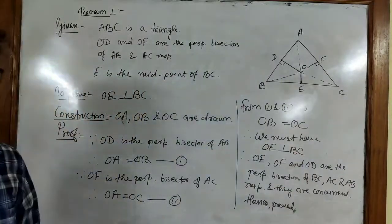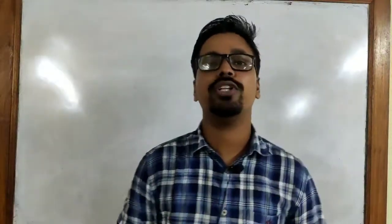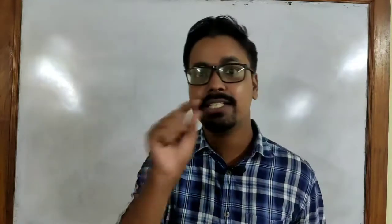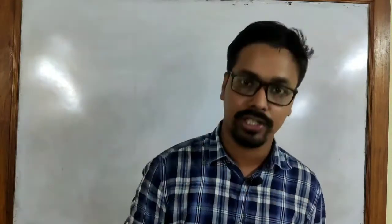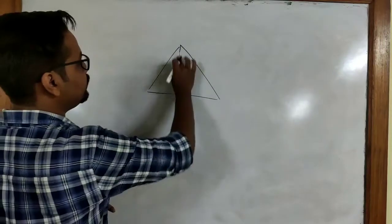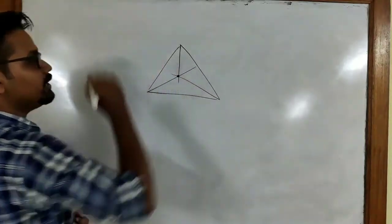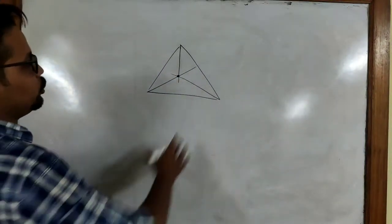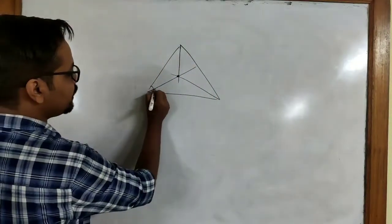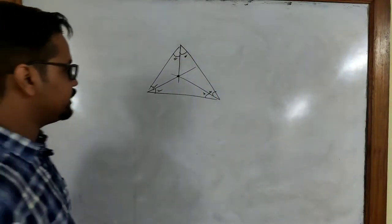I hope you understood this — this is the proof of the first theorem. Now we will move on to theorem 2. Theorem 2 states that the angular bisectors of all the angles in a triangle are concurrent. In theorem 1 it was the perpendicular bisector of all the sides; now we are talking about the angular bisector of all the angles. That means if this is a triangle, I draw the angular bisector of each angle, and they must meet at the same point. These angles will be equal, these angles will be equal, and these angles will also be equal.